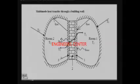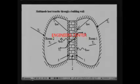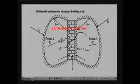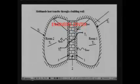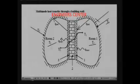Let me show an example of multimode heat transfer applied to a building. Here we have two rooms, room 1 and room 2, at two different temperatures. In this particular case, room 1 is at a higher temperature compared to room 2. There will be heat transfer between room 1 and room 2, and the surroundings of room 1 are at the same temperature as the room temperature T1. Similarly, room 2 has surface temperature T2 and air temperature T2.